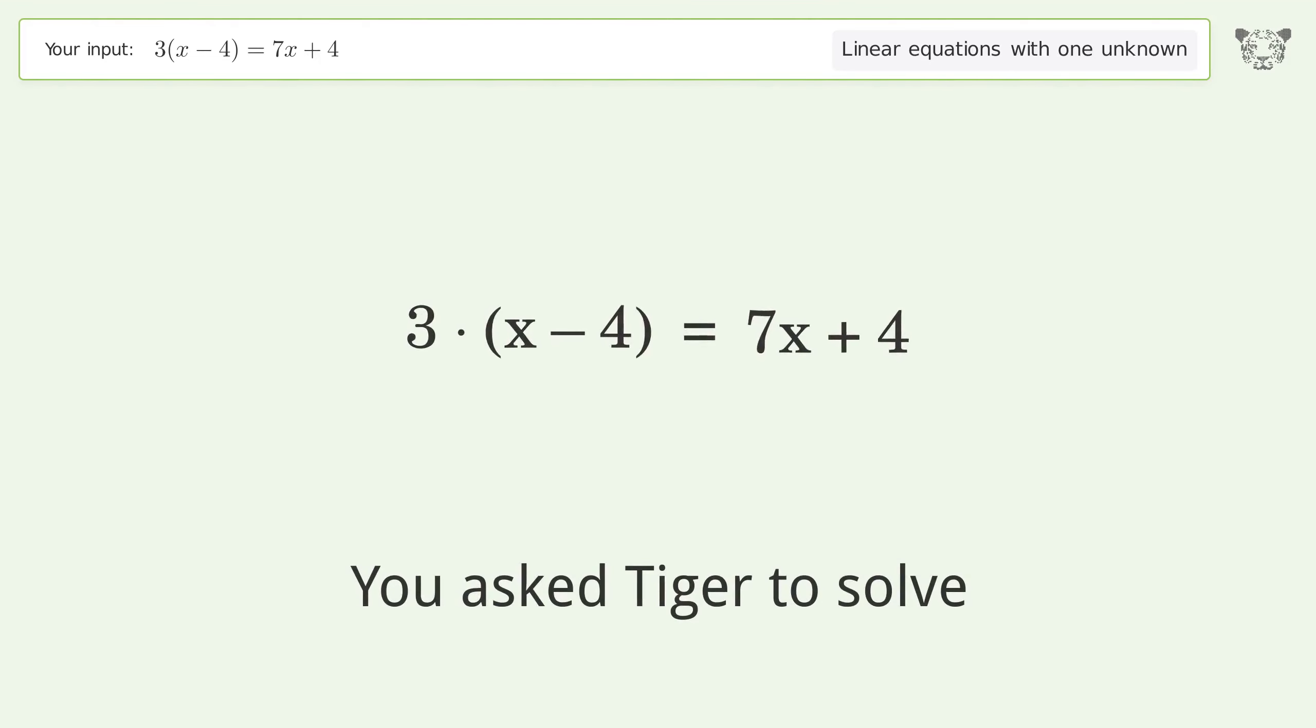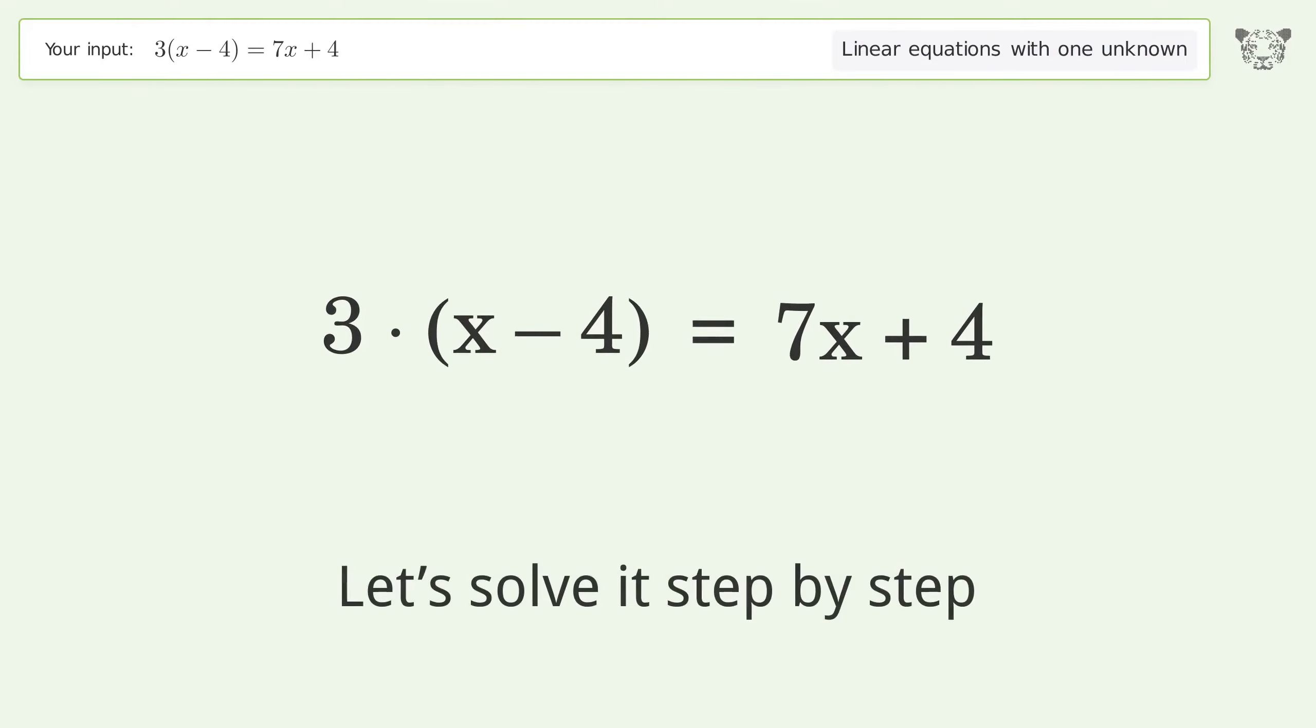You asked Tiger to solve this linear equation with one unknown. The final result is x equals negative 4. Let's solve it step by step and simplify the expression.